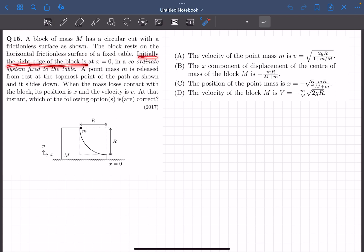Initially, the right edge of the block is at x equals 0 in a coordinate system fixed to the table. A point mass m is released from rest at the topmost point of the path as shown in the figure and it slides down.